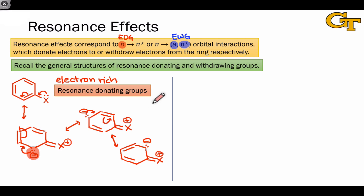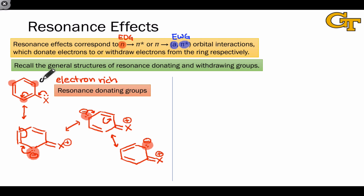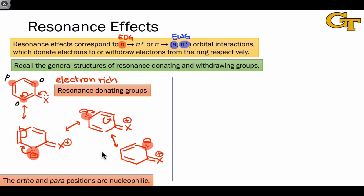The other important thing these resonance structures show us is the locations where the extra electron density resides — where we see negative charge within these resonance structures. The negative charge appears at the ortho positions and at the para position, relative to the substituent. These are the activated positions. Ultimately, these structures show us that the ortho and para positions are relatively nucleophilic relative to unsubstituted benzene.